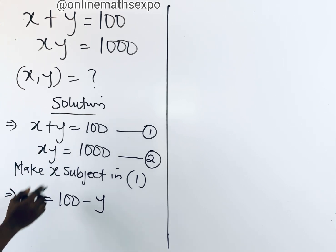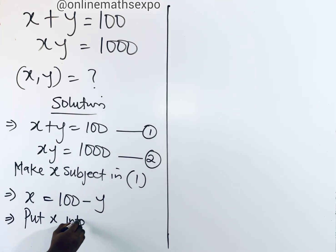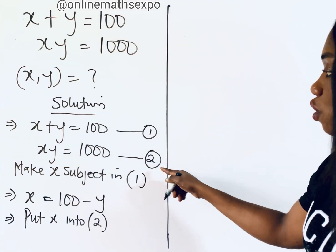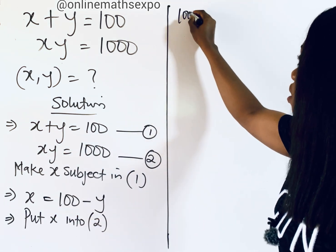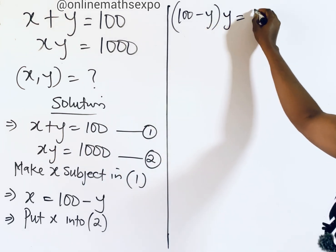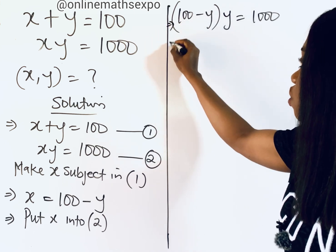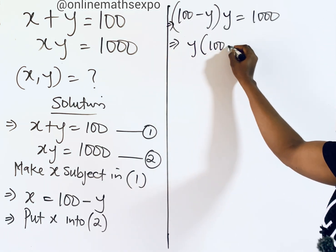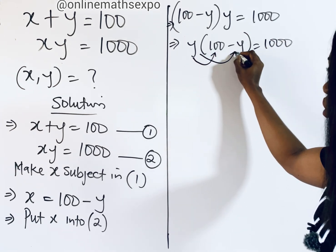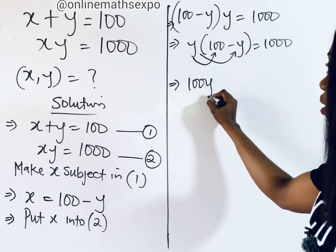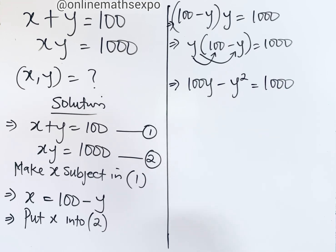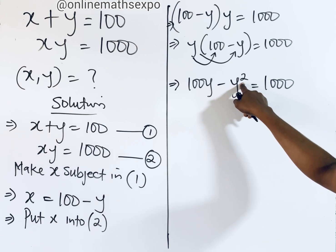Substituting x into equation two, we replace x with (100 minus y), so we have (100 minus y) times y equals 1000. This is the same as y times (100 minus y) equals 1000. Distributing y gives us 100y minus y squared equals 1000. You can see this is leading us to a quadratic equation, since the highest power of y is two.